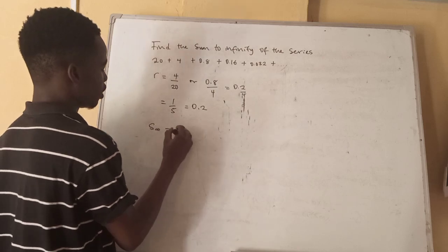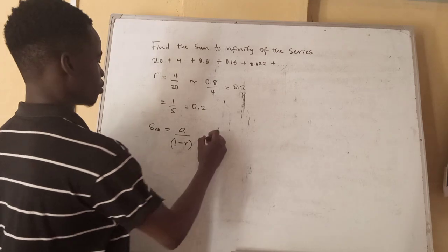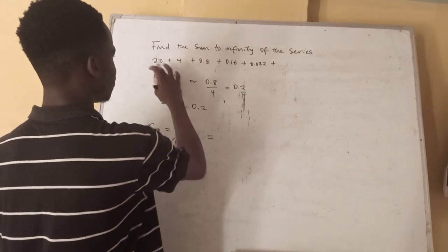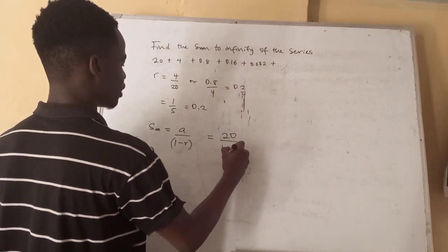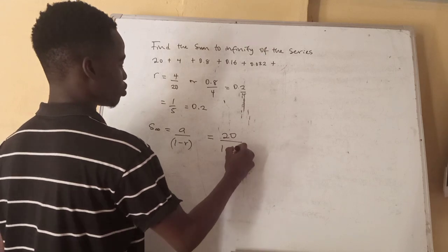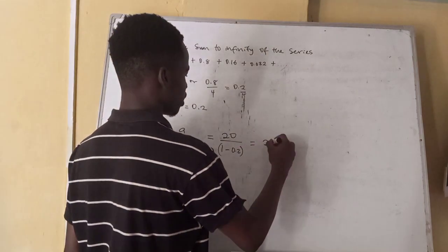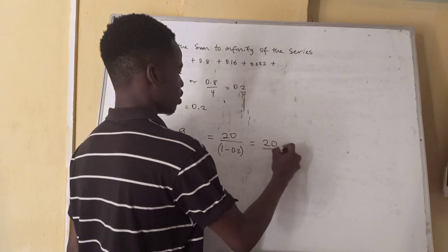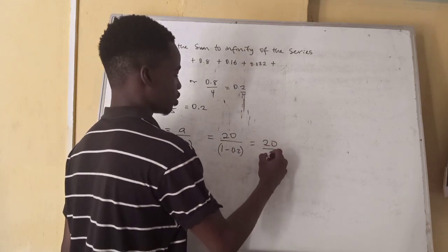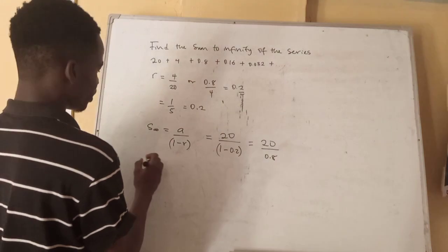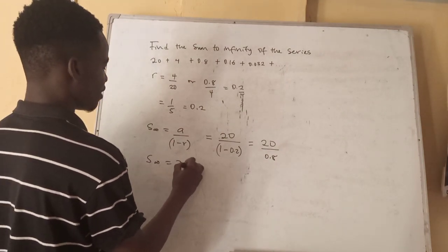Sum to infinity equals A over 1 minus R. Our first term A is 20 and R is 0.2. So we have 20 over 1 minus 0.2, which is 20 over 0.8. Therefore the sum to infinity equals 25.